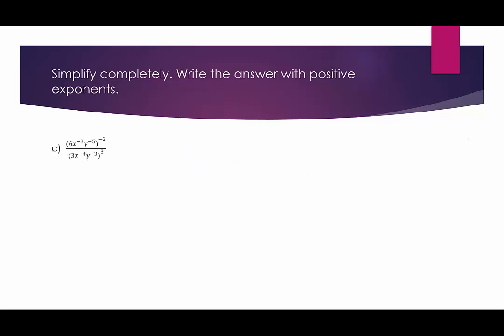Letter C — the first thing I want to do is the distributive property of exponents over multiplication. In the numerator, I have 3 distinct bases, so I distribute the exponent of negative 2 three times. That would be 6 to the negative 2, x to the positive 6 (since negative 3 times negative 2 is positive 6), and y to the 10th. In the denominator, I distribute the exponent of 3 three times, because I have three unique bases: 3 cubed, x to the negative 12th, and y to the negative 9th.